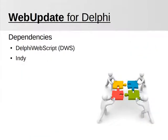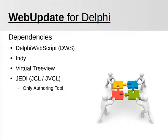In order to compile the shipped tools, there are a few dependencies. At least you need Indy and Delphi Web Script, as it is used by the core components. In addition, you need the Virtual TreeView library, which is used for the GUI tools. The authoring tool also needs the JEDI library, JVCL, for the filename edit control.